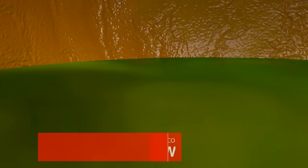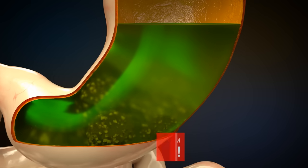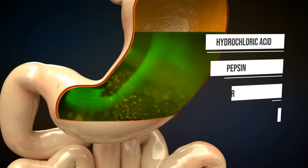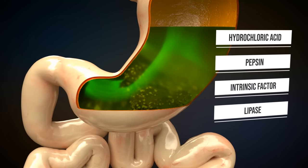Gastric juice consists, among other things, of hydrochloric acid, the enzyme pepsin, the intrinsic factor, and lipase for the digestion of fat.